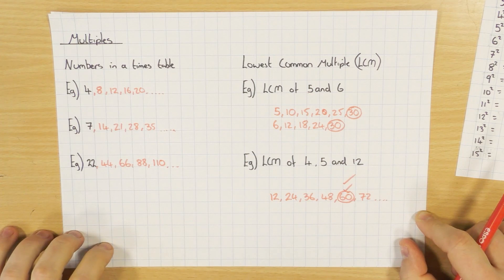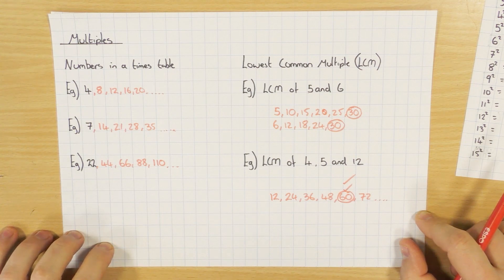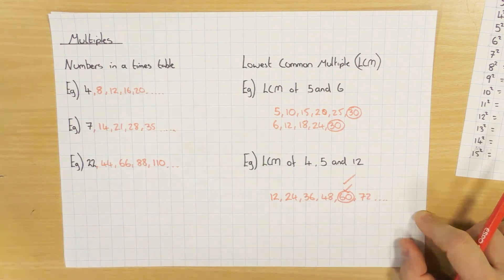So that's how to find the lowest common multiple and highest common factor of relatively small numbers. For big numbers, make sure you check out the video on how to do the highest common factor and lowest common multiple using a Venn diagram, and also using product of prime factors. Both videos are available on the channel, so give them a look. Hopefully that helps, guys — thanks for watching.